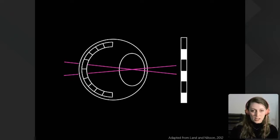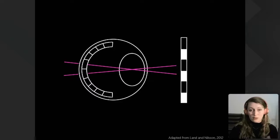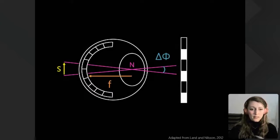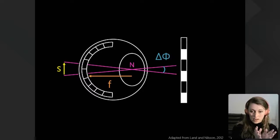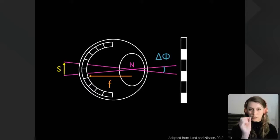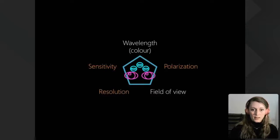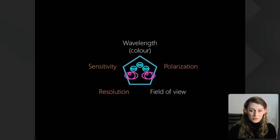A lot can be learned about eye function just from structure, thanks to decades of studies and some basic physics. From the spacing of photoreceptors in the retina and the angle that one pixel occupies in the image, we can deduce the maximum resolution of that eye — the finest detail it could resolve. In practice, that would correspond to the distance between the dark and white parts of a black-and-white grating presented to the animal.